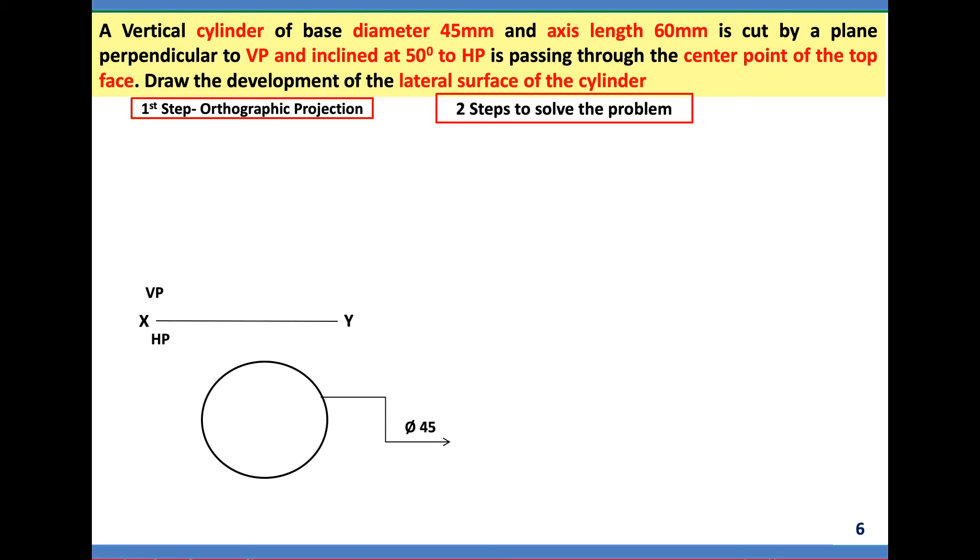Since it has not got edges, we have to create generators. So divide the circle into a good number of divisions. I divided the circle into 1, 2, 3, 4, 5, 6, 7, 8, 9, 10, 11, 12 divisions. If I make less number of divisions, then in development you won't get a smooth curve. So in order to get it, go to a good number like 12 divisions.